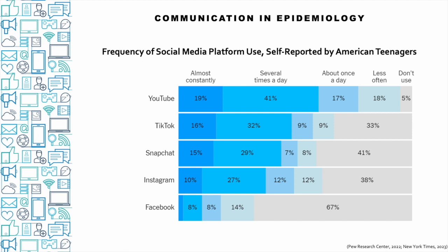The Pew Research Center — a non-partisan organization — conducted an online survey which led to its report 'Teens, Social Media and Technology 2022,' administered in English and Spanish with 1,316 respondents. What really stands out is how different social media use is between generations. Looking at the YouTube category: 19% of teens are using it almost constantly, 41% several times a day, and 17% once a day — combined, 77% of American teens in 2022 were using YouTube at least daily. That's striking.